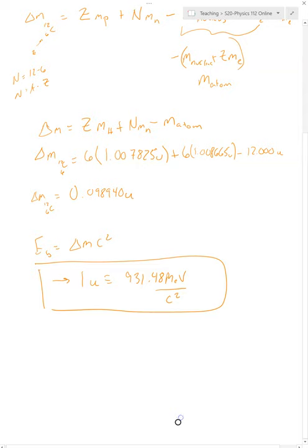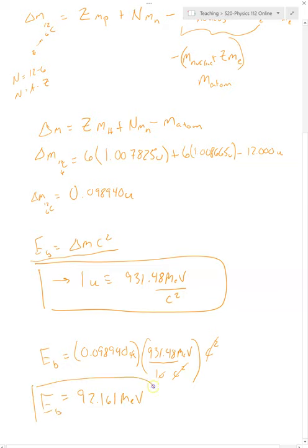Let's find our binding energy. The mass is 0.098940 units. Now let's convert that: one unit is 931.48 mega electron volts divided by c squared. Because that's divided by c squared, I'm putting that c squared down here, and then the whole formula is times c squared. You see why this works out so well—the c squareds cancel out, the u's cancel out, and you get your answer in terms of mega electron volts, which is 92.161 MeV. That's how you get the binding energy.